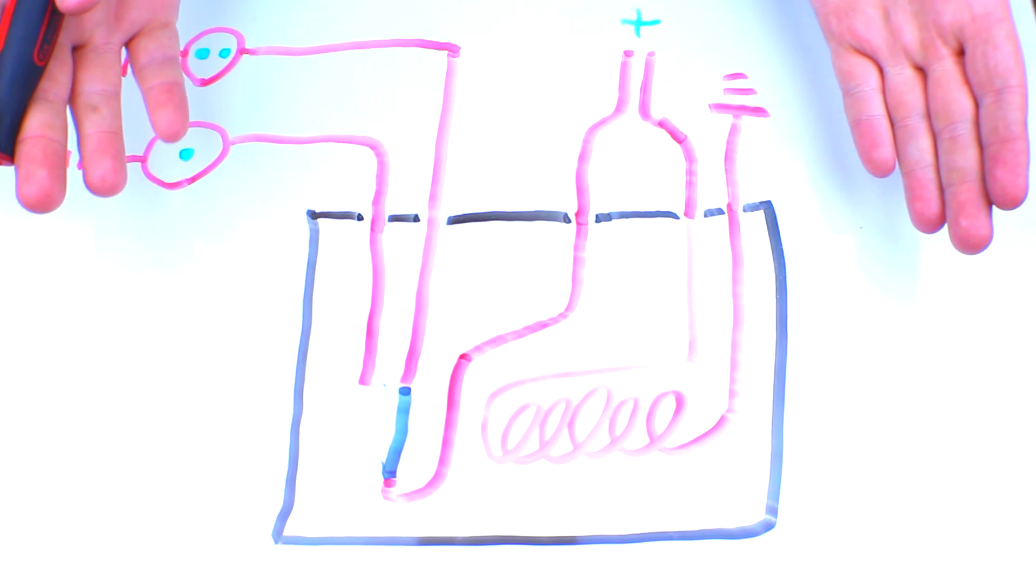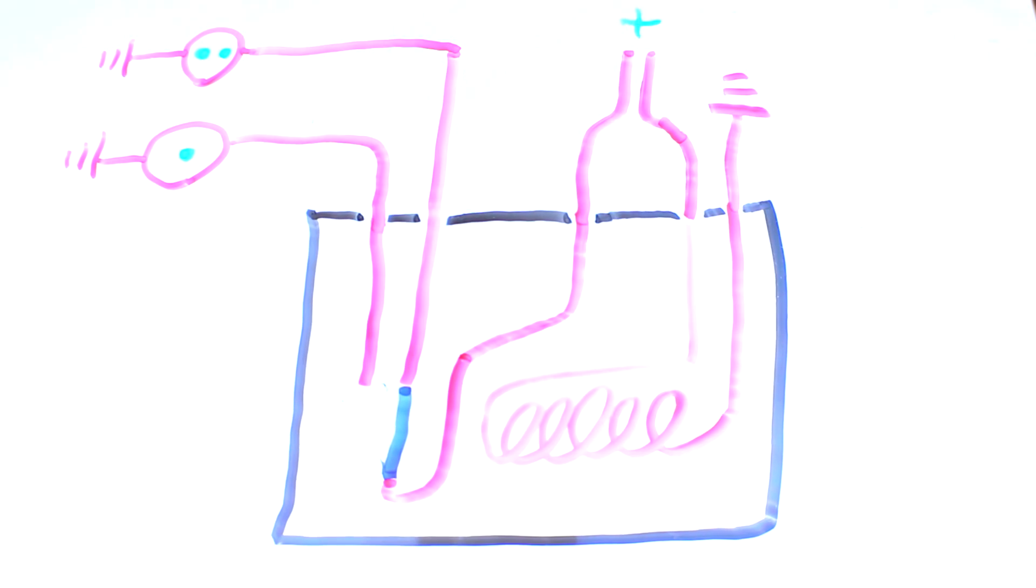So when you're describing a relay to someone, what would you call all these circuits? This is your coil circuit. This is our normally on circuit and this is our normally off circuit. It's called normally on and normally off referring to when this coil is not energized.